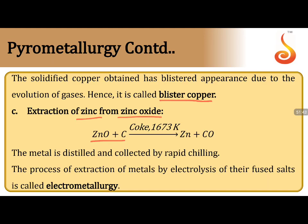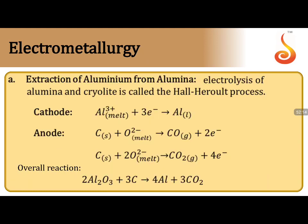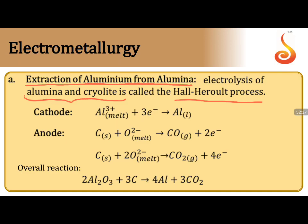Extraction of zinc from zinc oxide (Belgian process): ZnO is reduced by coke at a minimum of 1673 K. Below that temperature, the reaction does not take place. The metal zinc is distilled and collected by rapid chilling. Electrometallurgy (extraction by electrolysis) is applicable only for highly reactive/electropositive metals like alkali metals, alkaline earth metals, and aluminium.